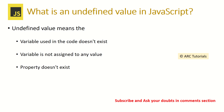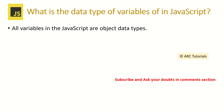What is an undefined value in JavaScript? Undefined value means the variable used in the code doesn't exist, or the variable is not assigned to any value, or the property doesn't exist. Also, all variables in JavaScript are object data types.